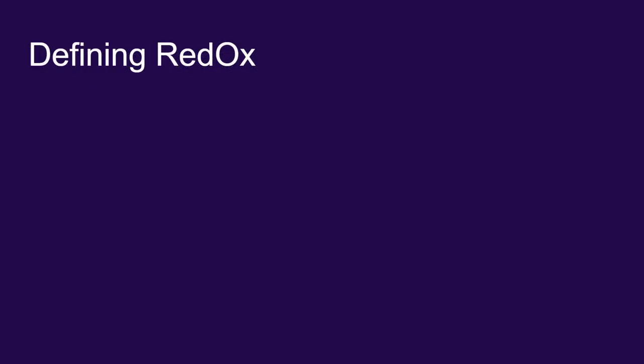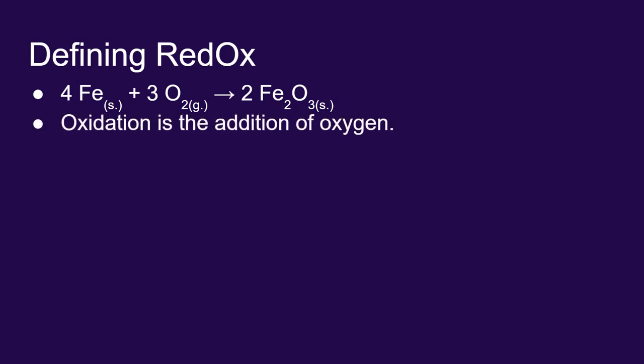Let's define what redox means. What does it mean if we have oxidation and reduction? One of the most common cases of oxidation is the oxidation of iron. Iron, when exposed to oxygen, will form iron oxide. We call this rust. In this reaction, I have iron combining with oxygen to form iron oxide. The word oxidation simply comes from adding oxygen.